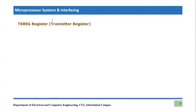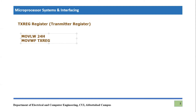For example, if I want to transmit the value 0x24 serially, I will put that value inside this register. I will move it into the working register first, which is a very important and integral register, and then we will move the working register into the transmit register. So the value 0x24, which was the content of the working register, will move into the transmit register.